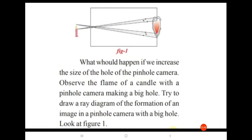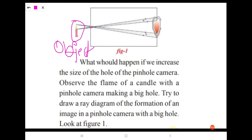What would happen if we increase the size of the hole of the pinhole camera? Through the pinhole camera, the light ray enters inside the camera. This is the source of light — that means this is the object. From this object, the light ray enters the inside of the camera from both the top and the bottom. Try to draw a ray diagram for the formation of image in a pinhole camera with a big hole.